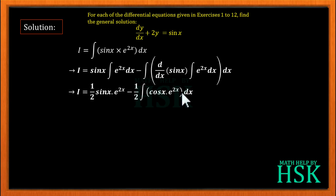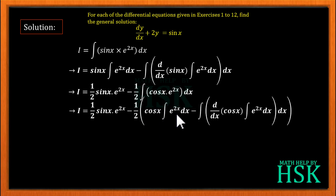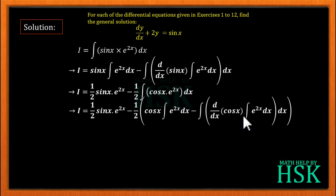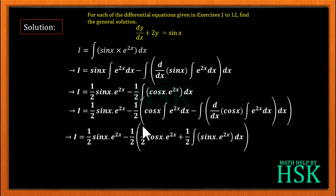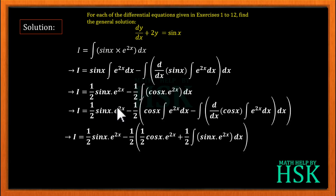Now applying integration by parts again to ∫cos x · e^(2x) dx, I take cos x as the first function. This gives cos x · (1/2)e^(2x) minus the integral of [differentiation of cos x times (1/2)e^(2x)]. Since differentiation of cos x is −sin x, the minus-minus becomes plus. So we get (1/2)cos x · e^(2x) + (1/4)∫sin x · e^(2x) dx.